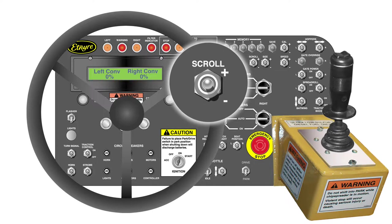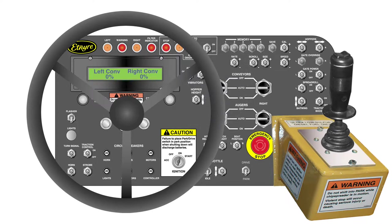Pressing the scroll switch up again will show the actual speed of both conveyors. The conveyor speed percentage can be changed at any time whether or not the conveyors are moving. Adjusting the speed of the conveyors is particularly useful in doing shoulder work or in operations requiring less than full hopper width. It is also useful in trying to smooth out delivery of material to match the rate being spread.